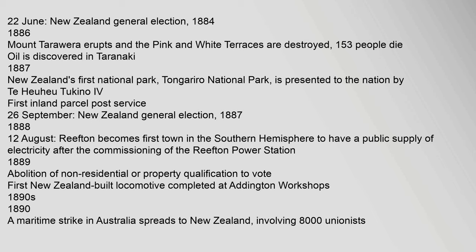1887: New Zealand's first national park, Tongariro National Park, is presented to the nation by Te Heuheu Tukino IV. First inland parcel post service. 26 September: New Zealand general election. 1887–1888: 12 August — Reefton becomes the first town in the Southern Hemisphere to have a public supply of electricity after the commissioning of the Reefton Power Station. 1889: Abolition of non-residential or property qualification to vote. First New Zealand-built locomotive completed at Addington workshops.